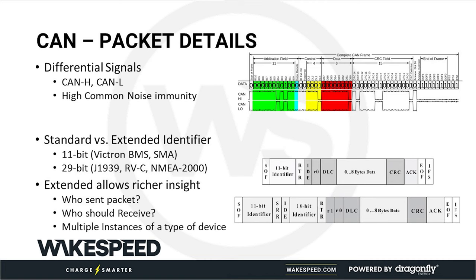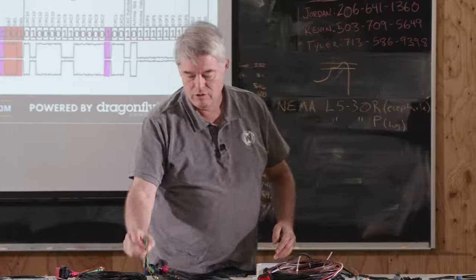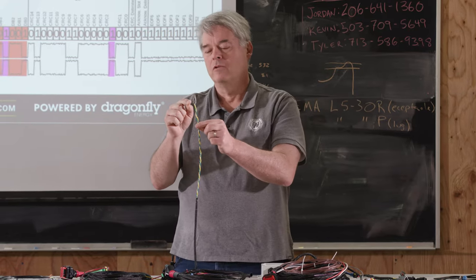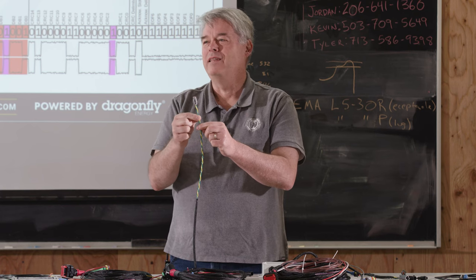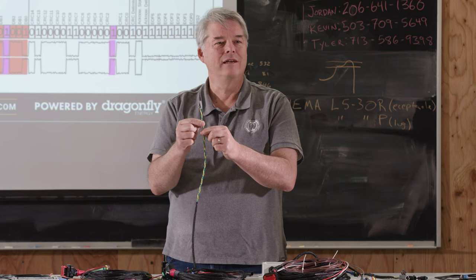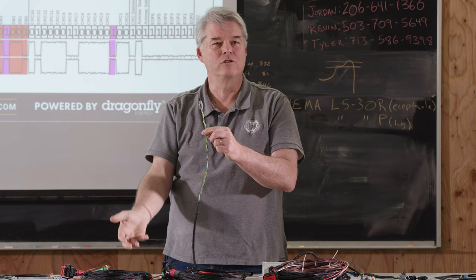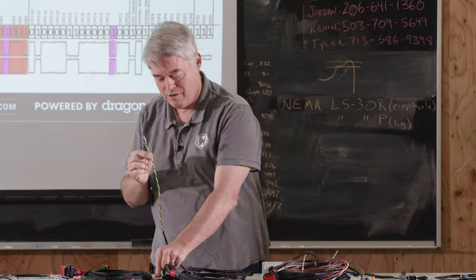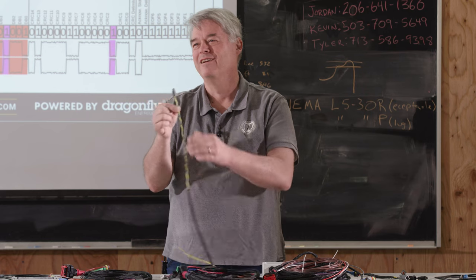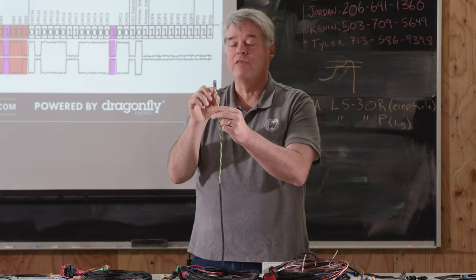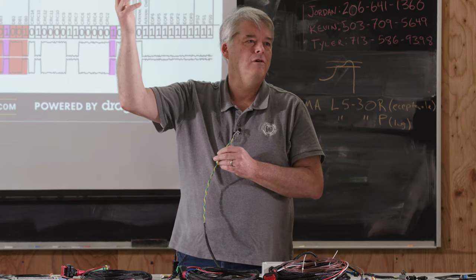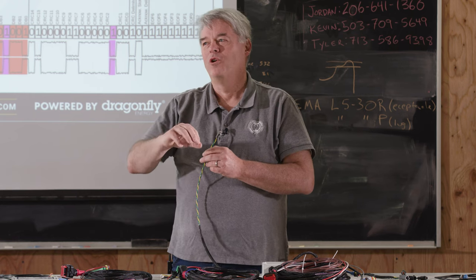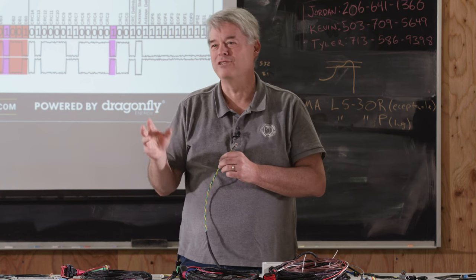The CAN subsystem hardware consists of three wires: CAN high, CAN low, and a ground reference. In the automotive standard, CAN high is yellow like the sun, and CAN low is green like the grass. In the marine NEMA 2000 world, CAN high is white like the clouds and CAN low is blue like the water. Please don't hook the yellow CAN wire up to your stator — we've had people do that.